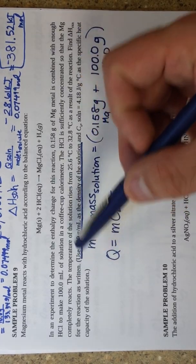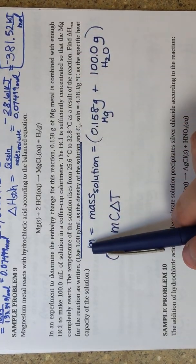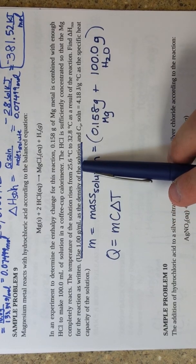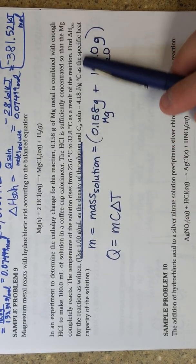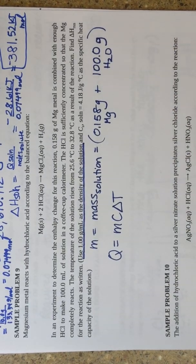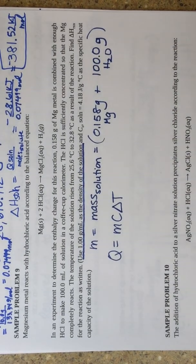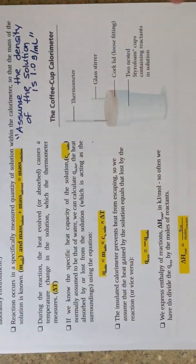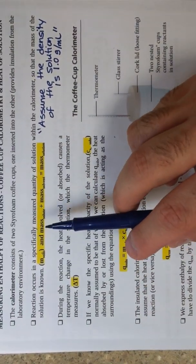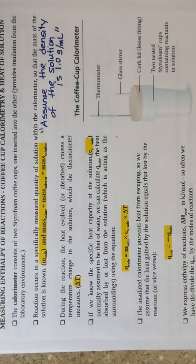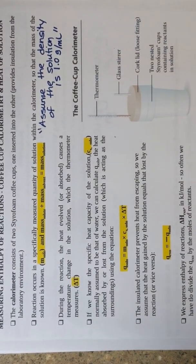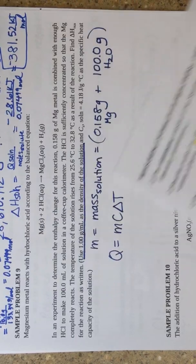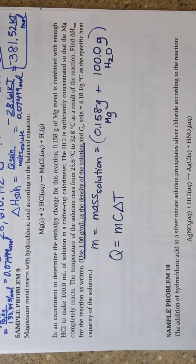Find delta H for the reaction as written. Use 1 gram per milliliter as the density of the solution. Specific heat of the solution is 4.18 Joules per gram degree Celsius. Remember, as mentioned in class, the mass of the solution is the mass of the solute plus the mass of the solvent. They already gave you that the solution is 100 milliliters.